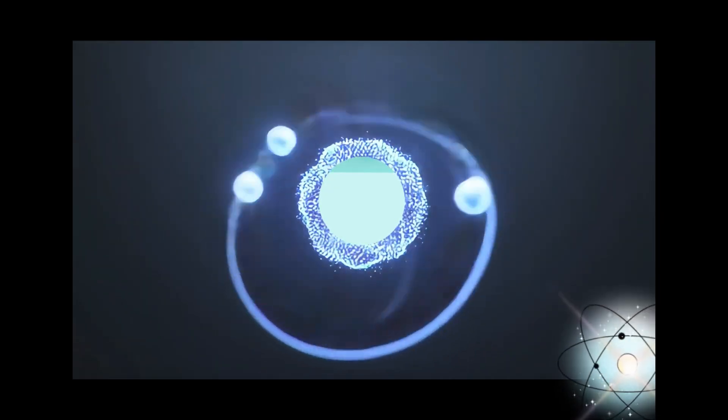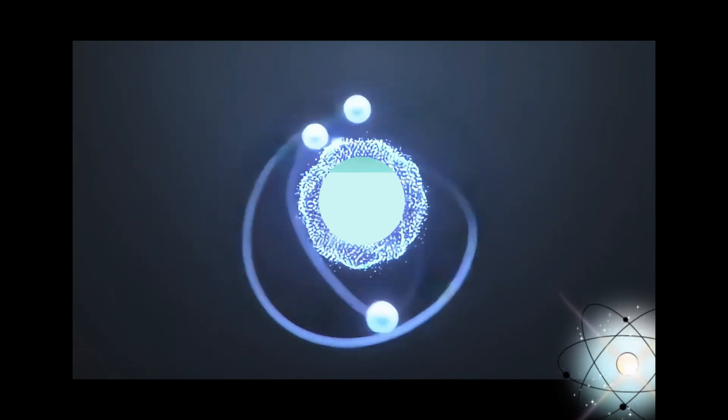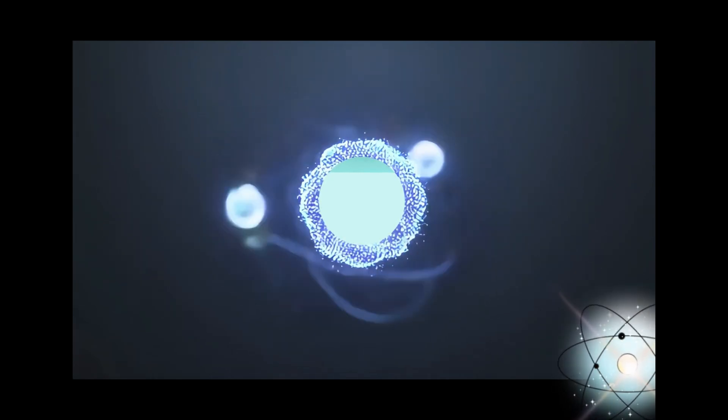This type of growth is characterized by grains extending from the heat-affected zone into the molten weld metal, maintaining the crystallographic orientation of the base material.